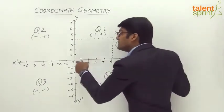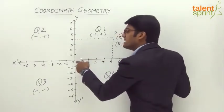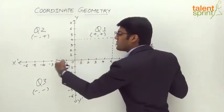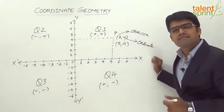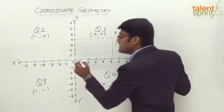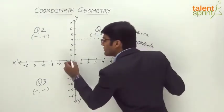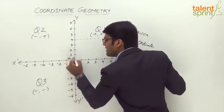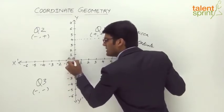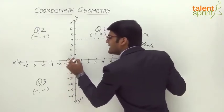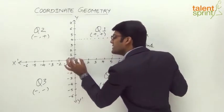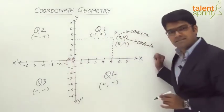The origin of this coordinate system — the intersection of both mutually perpendicular axes — is described by the ordered pair (0, 0), because the point O is at a distance of 0 units from the x-axis and 0 units from the y-axis.